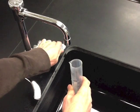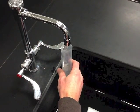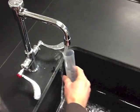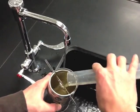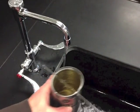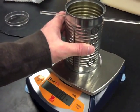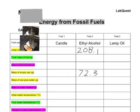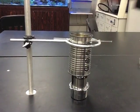Go ahead and add about 200 milliliters of cold tap water. It doesn't have to be exact because you're going to weigh it anyway. There's 200 milliliters. Weigh the can now that it's got the water in it, then put the can back on your apparatus.